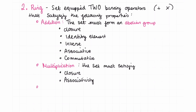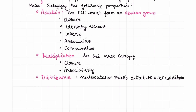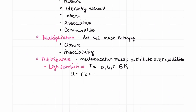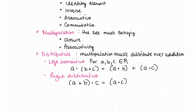The final property that the set plus two binary operators must satisfy considers both addition and multiplication: it must be distributive — multiplication must distribute over addition. There are two types: left distributive and right distributive. Left distributive: a multiplied by (b + c) equals a·b + a·c. Right distributive: (a + b) multiplied by c equals a·c + b·c.